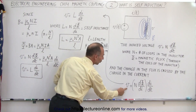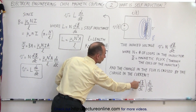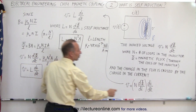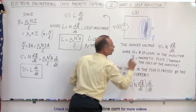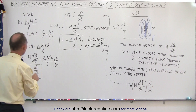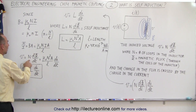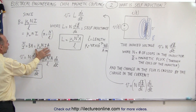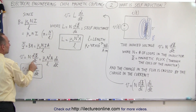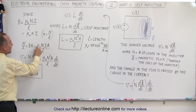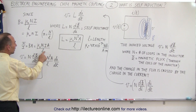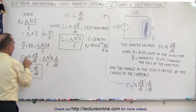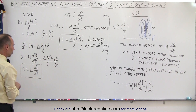We remember that the voltage is equal to N times the change in flux with respect to current times the change of current with respect to time, or N times the change in flux with respect to time. Since the flux equals μ₀NiA/L, then d/dt of the flux is d/dt of this expression, and the only thing changing is the current. So we write μ₀N times A divided by L times di/dt times N, and that's where the N² comes from.